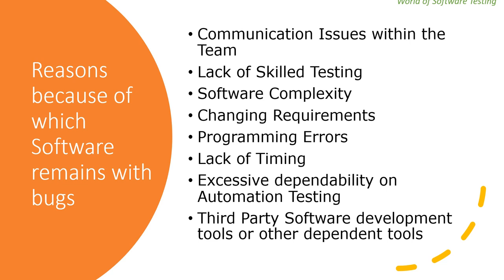The next reason is lack of timing. Improper or unrealistic project timing plans are a major concern during the software development process. If there is a lack of timing in requirement analysis, design, coding, and testing, it definitely leads to mistakes in understanding requirements, design, coding, and testing. Almost all phases must have proper, realistic project planning. This leads to bugs in the software application because of improper unrealistic project timing plans.